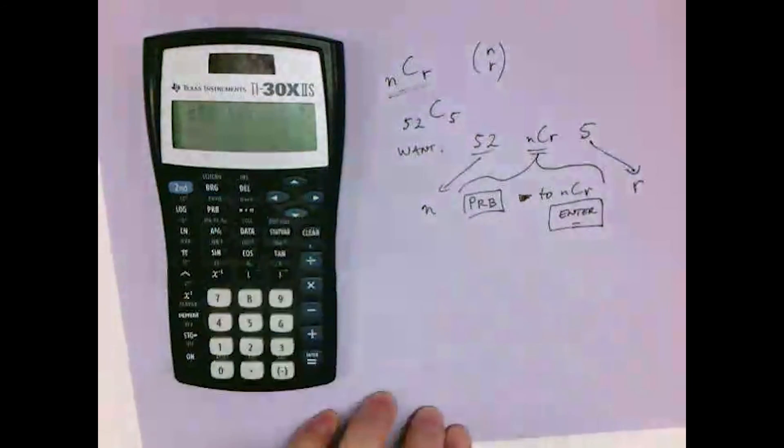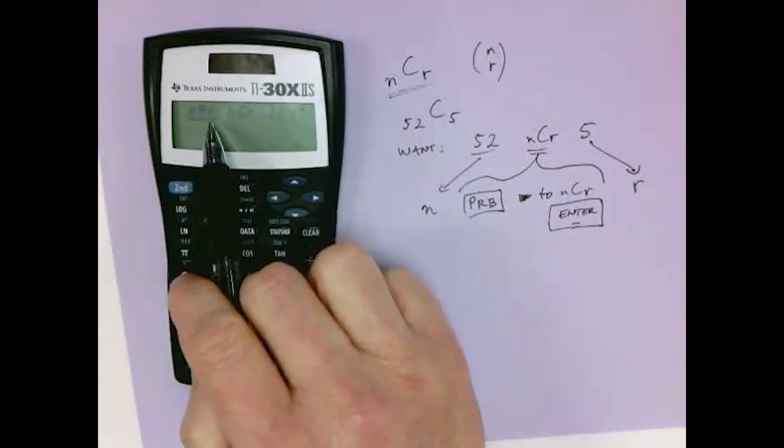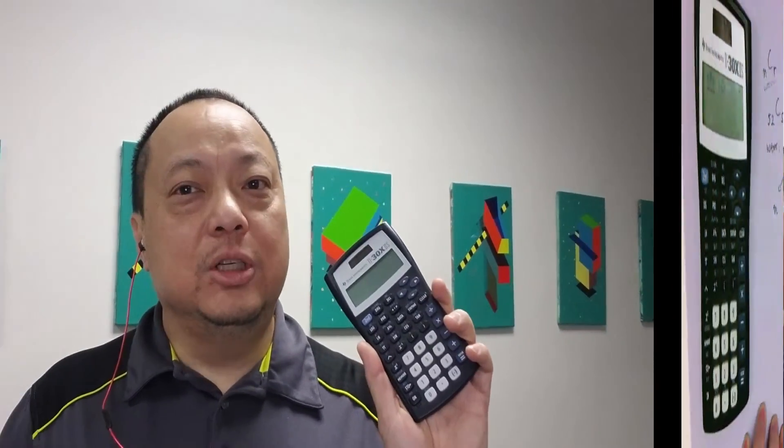You can use the same procedure for NPR and factorial. Hope that helps.